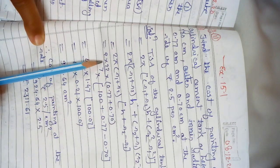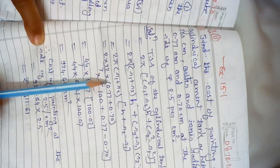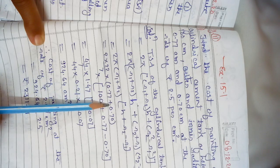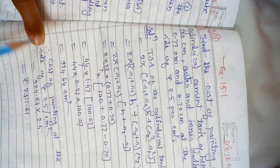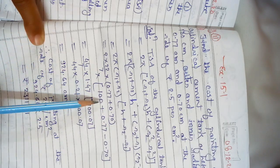By substituting all the values we are getting 2 × 22/7 × (0.77 + 0.70) × (100 + 0.77 - 0.70).